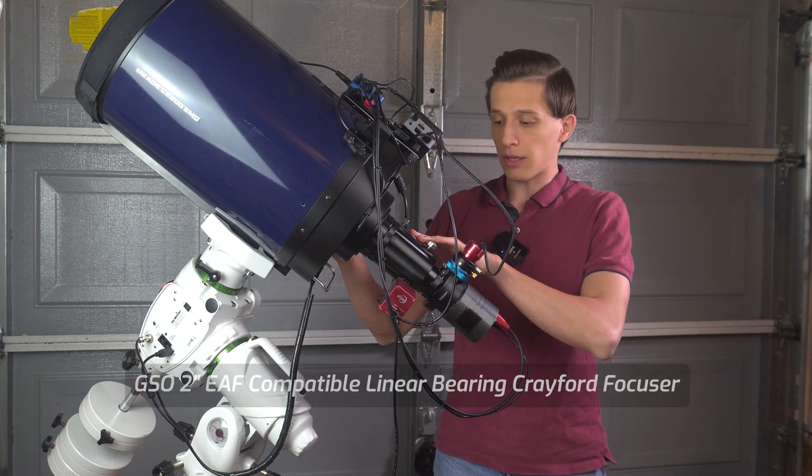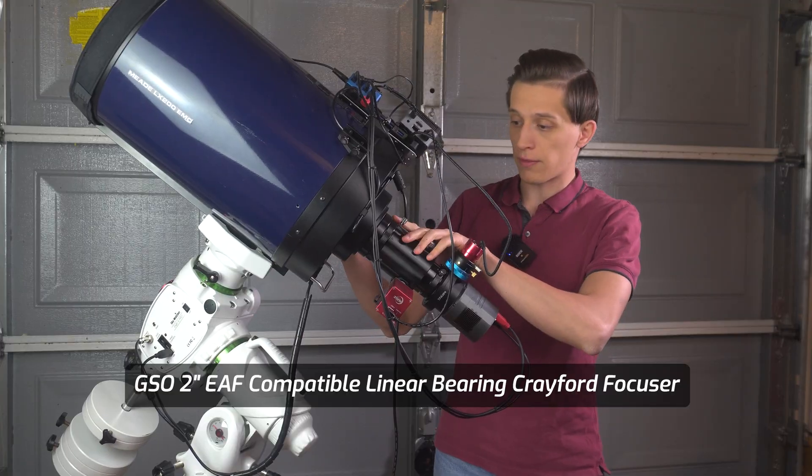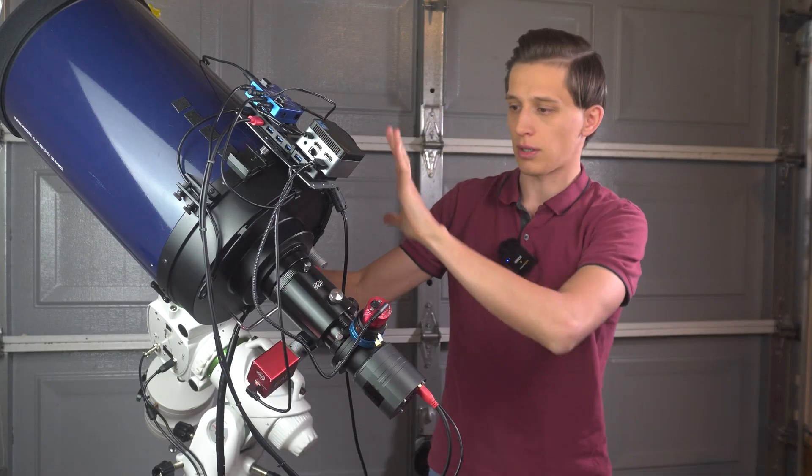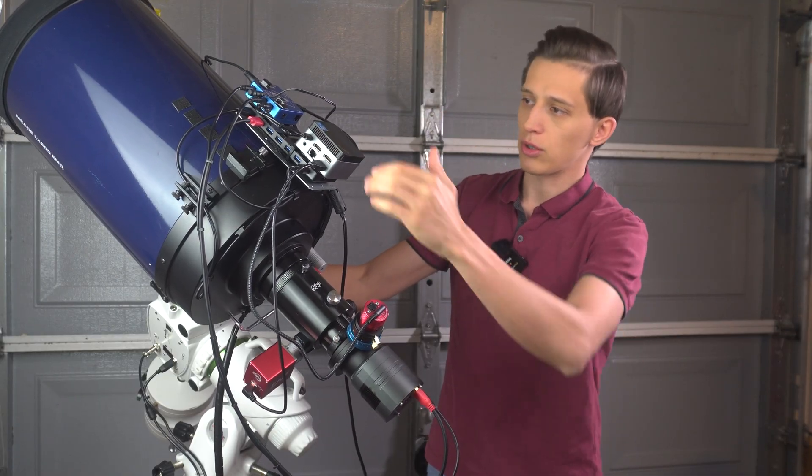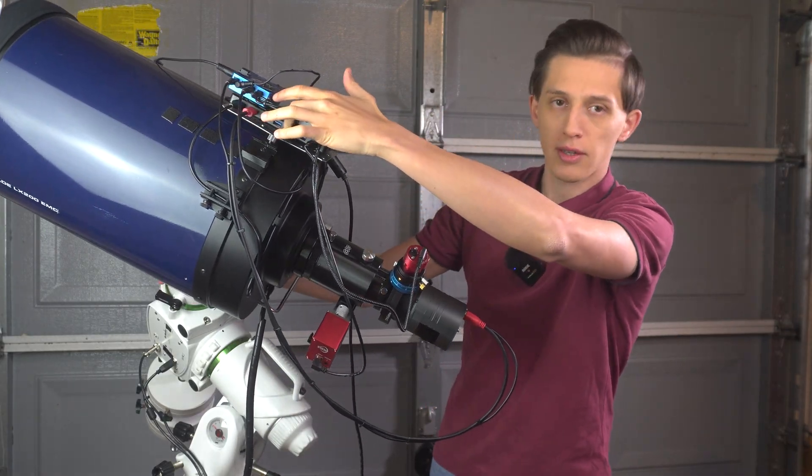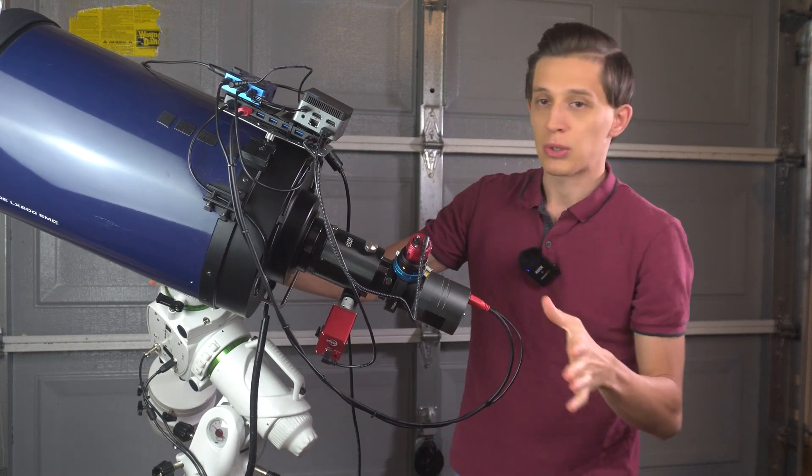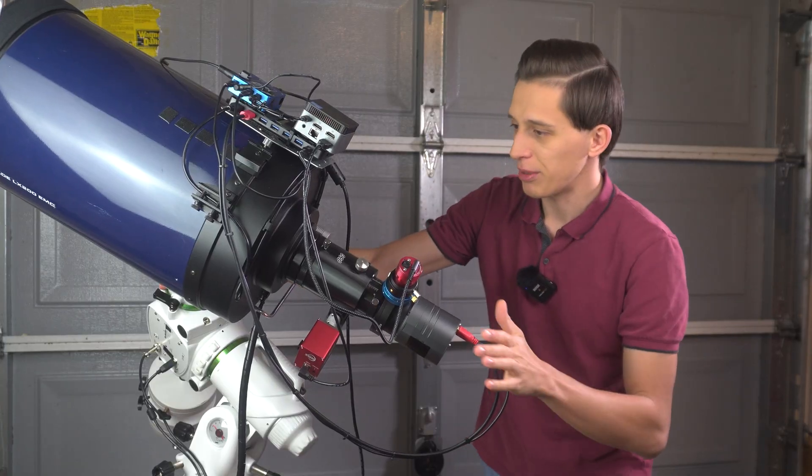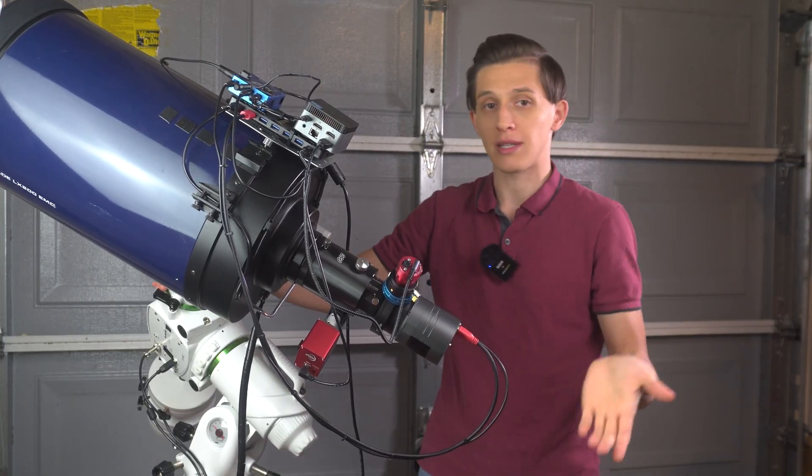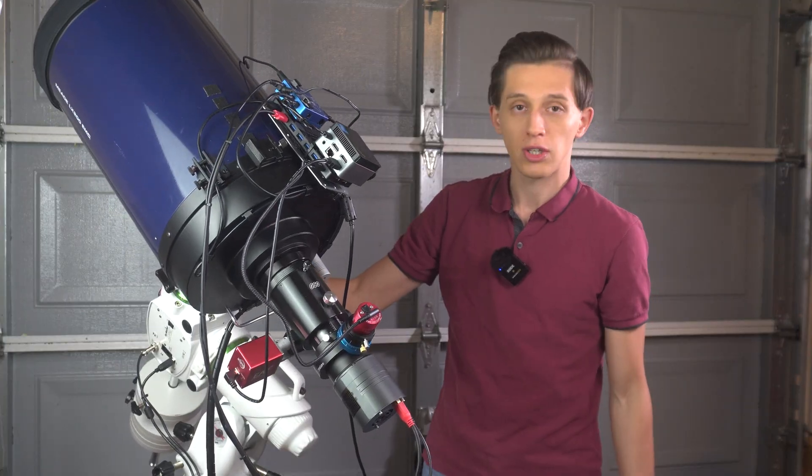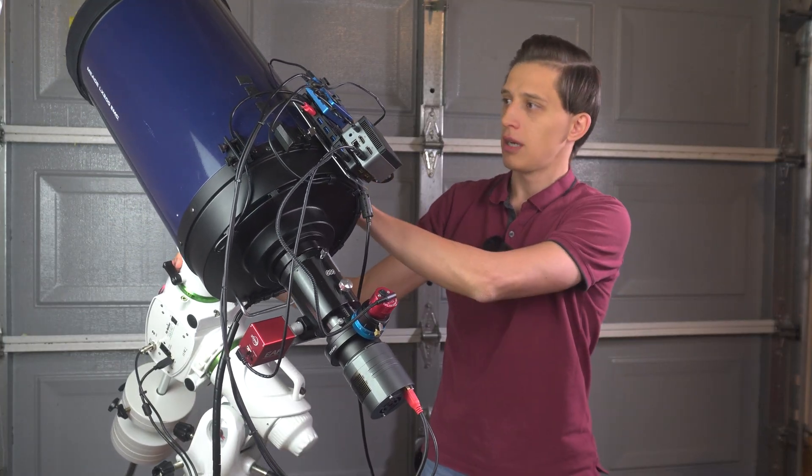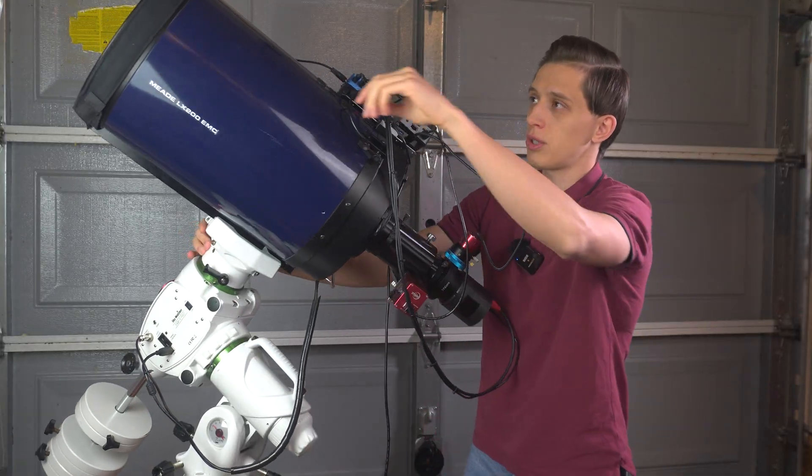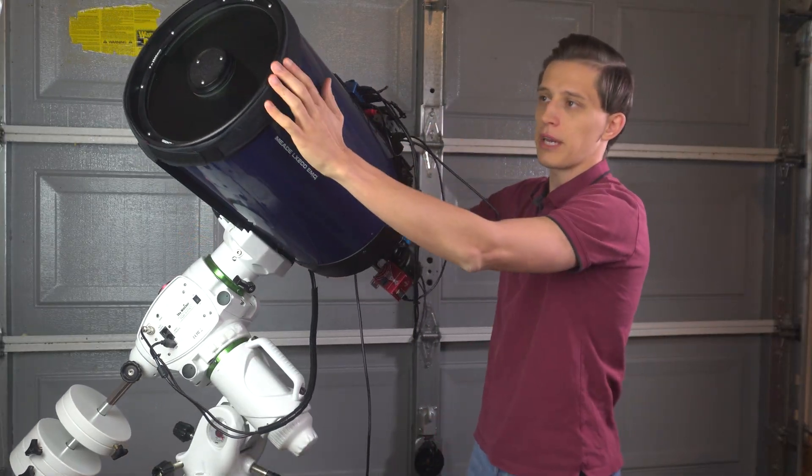So the focuser here is a GSO Crayford style focuser. On the top I got here a mini PC, Pegasus power box to basically power everything and on the bottom I got a small seven position USB hub. Now talking about the cable management, this system is way out of being perfect since this is just a test imaging rig and the idea here is to see what images can be taken using this pretty old but good telescope. And of course I have a dew heater on that part.